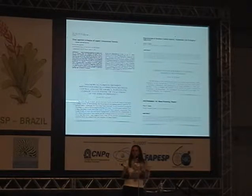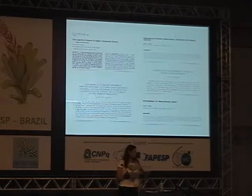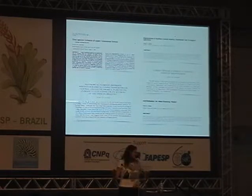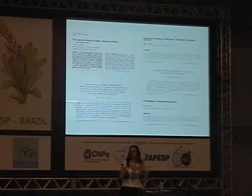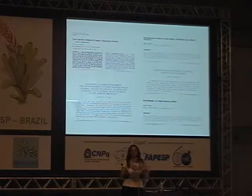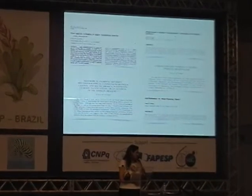Al Gentry published over 350 papers during the 25 years he worked on Bignoniaceae, which is really amazing. From some of the titles, you can see he looked at co-evolutionary patterns, raised biogeographical hypotheses, and studied community structure. He left this amazing set of hypotheses that were waiting to be tested.